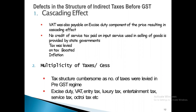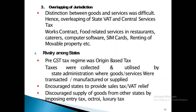Multiplicity of taxes and complex tax structure: before GST, numerous taxes were levied — excise duty, VAT, entry tax, luxury tax, entertainment tax, service tax, octroi duty, etc. Overlapping of jurisdiction was a problem — distinction between goods and services was difficult, causing overlap between state VAT and central service tax in areas like works contracts, food-related services in restaurants, computer software, SIM cards, and renting of movable properties.